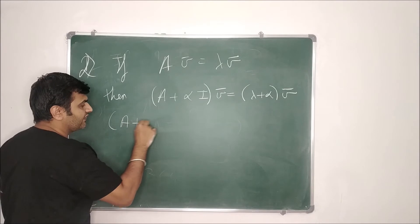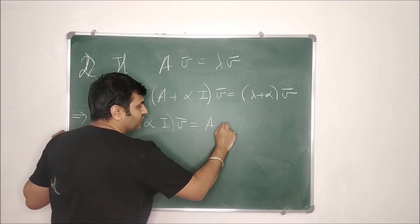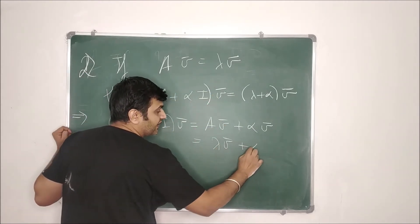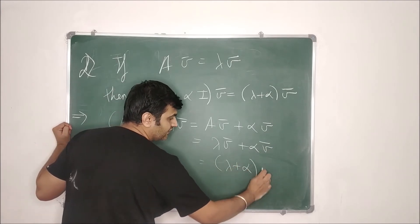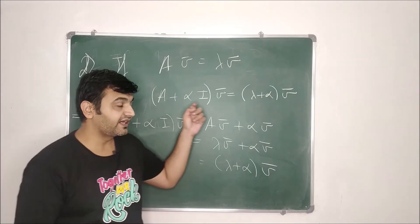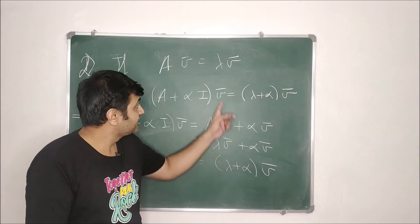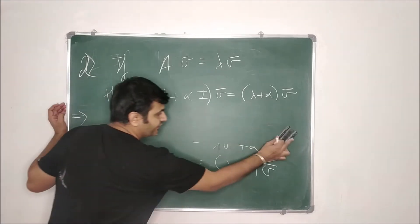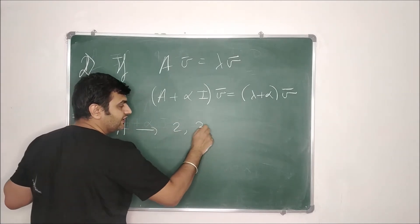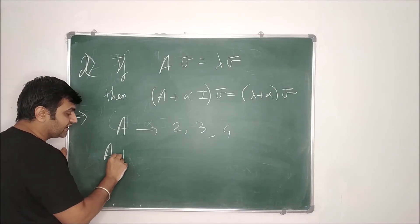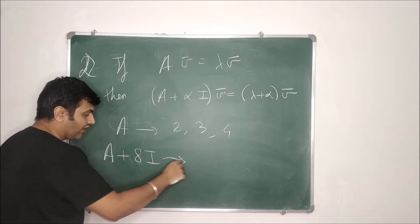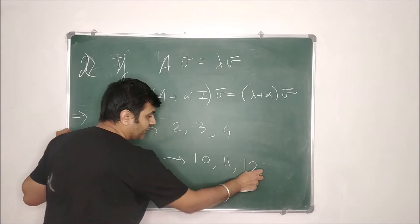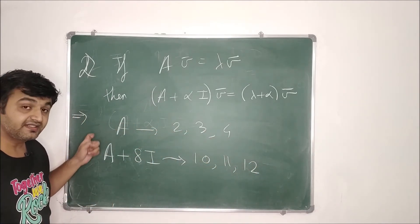The proof: starting from the left-hand side, (A + alpha·I)v̄ = Av̄ + alpha·v̄ = lambda·v̄ + alpha·v̄ = (lambda + alpha)v̄. So whenever you add a scalar matrix to A, eigenvectors remain the same but you add that scalar to the eigenvalue. For example, if A has eigenvalues 2, 3, 4 then A + 8I has eigenvalues 10, 11, 12, and the eigenvectors remain the same.